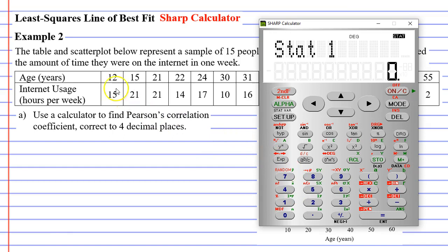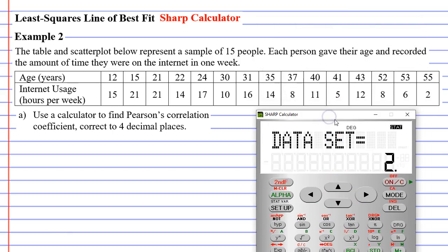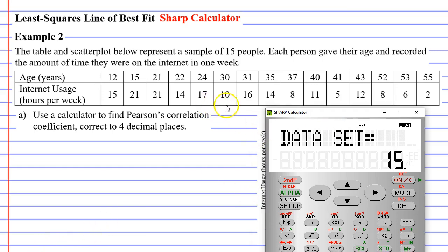When we enter in our values, we do one column at a time. So we'll enter in the 12 and the 15 by going 12, STO, 15, then M+. We've now entered in one set of data values. Moving on to the next column, 15 and 21, so 15, STO, 21, M+. We've now entered two sets of data values. What I'm going to do is pause and put in the rest of the data values. I want you to do this with me. All right, I've entered my set of data values, and I can see that it says 15 here, which is good because I've got 15 sets of data values.